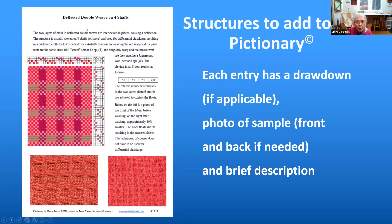Here's an entry from the Pictionary — this happens to be deflected double weave on four shafts. All the structures, at least so far, are on four shafts. It's literally a dictionary with a picture: a brief description of the weave, a drawdown if applicable, and then photos — always a photo of a sample. In this case, because this involves differential shrinkage, the photos are before and after wet finishing. Sometimes the photos are front and back of the fabric. Each structure is one page and can be downloaded as a PDF. There are over 80 entries.